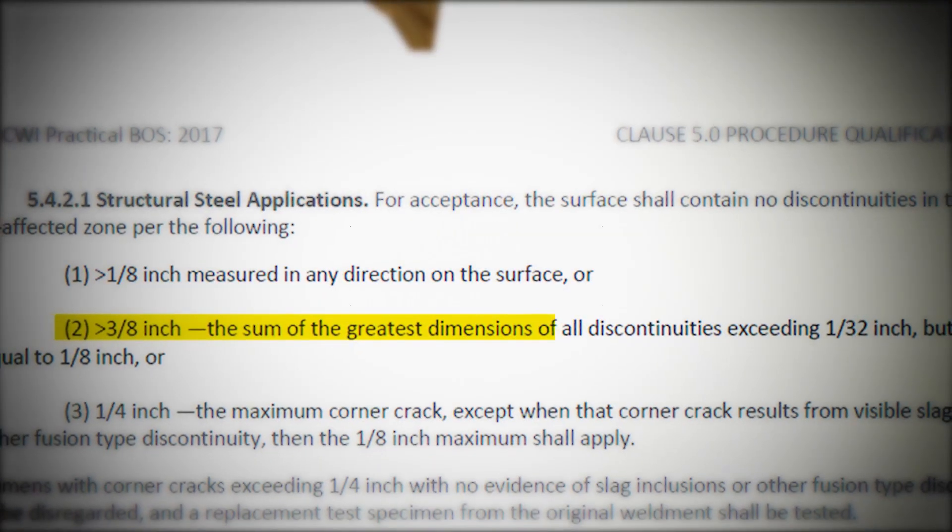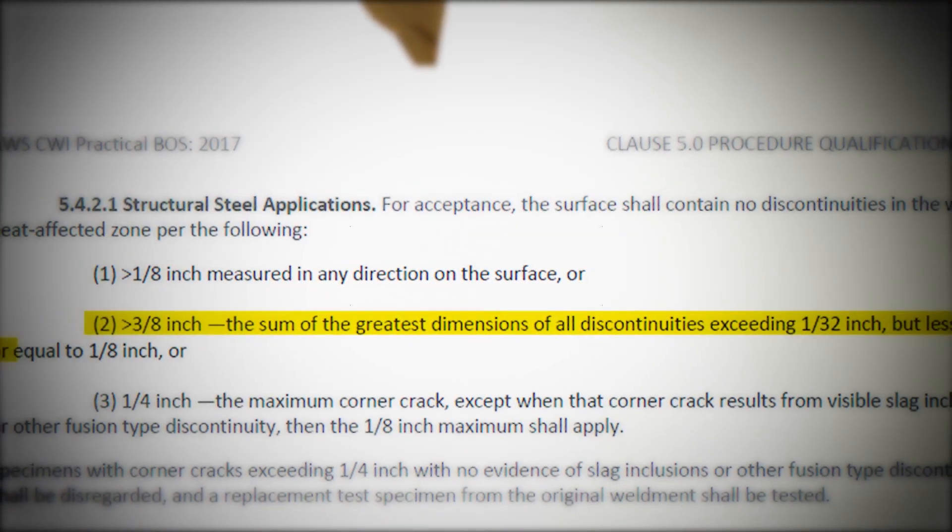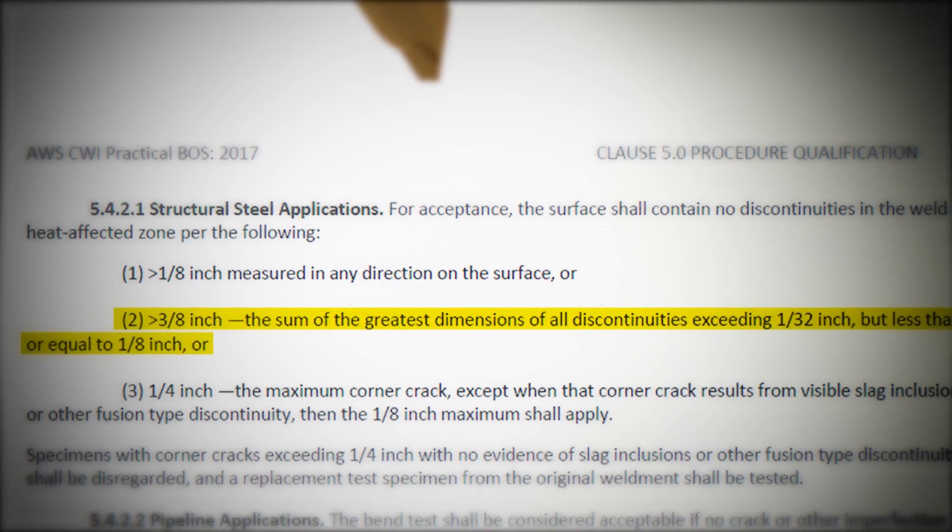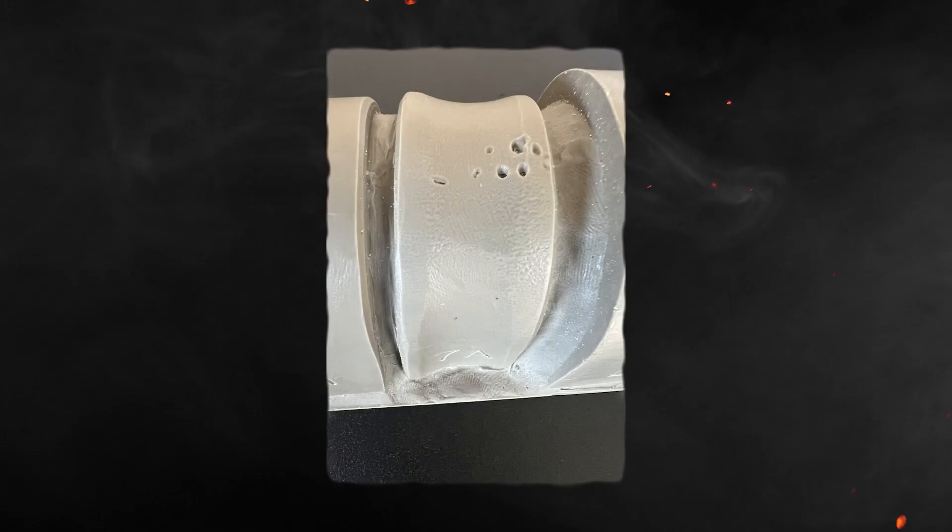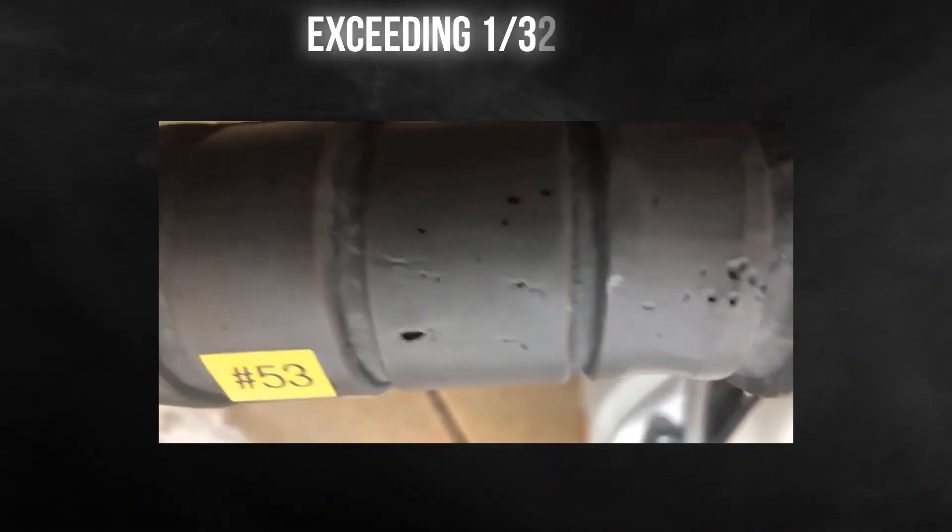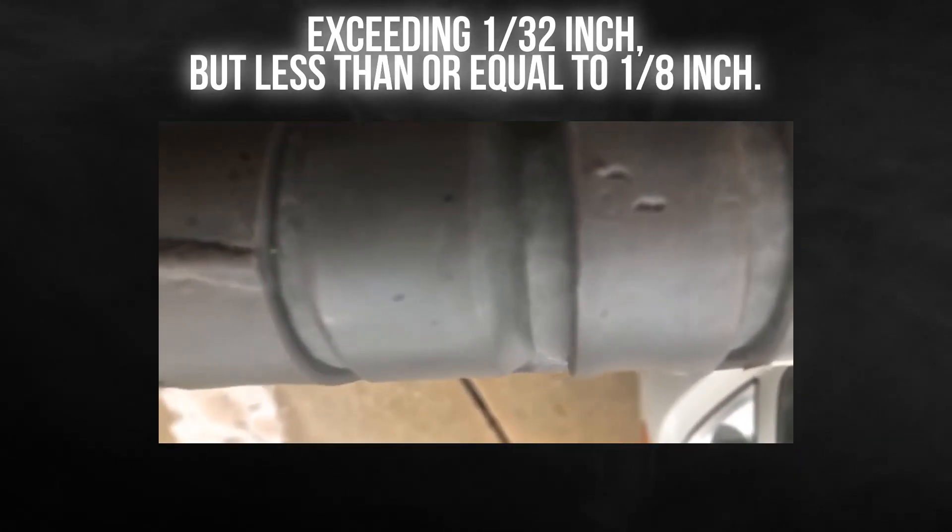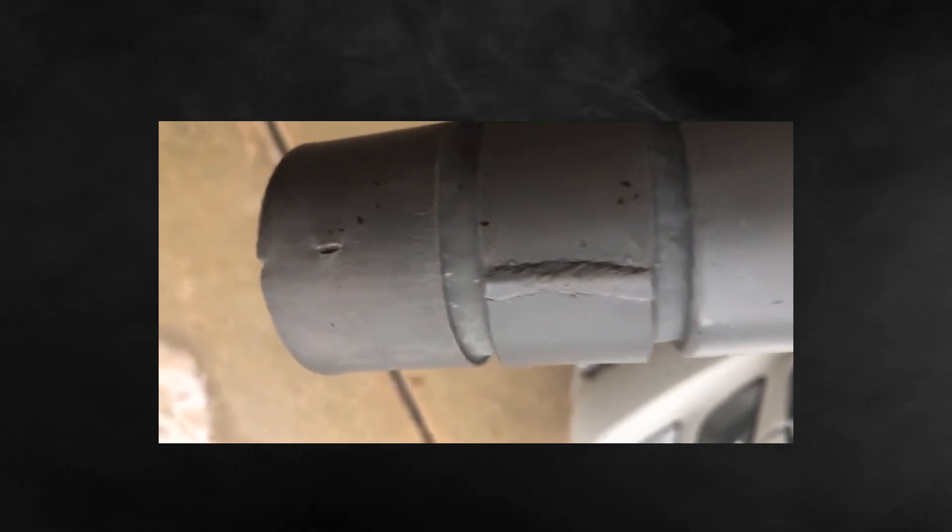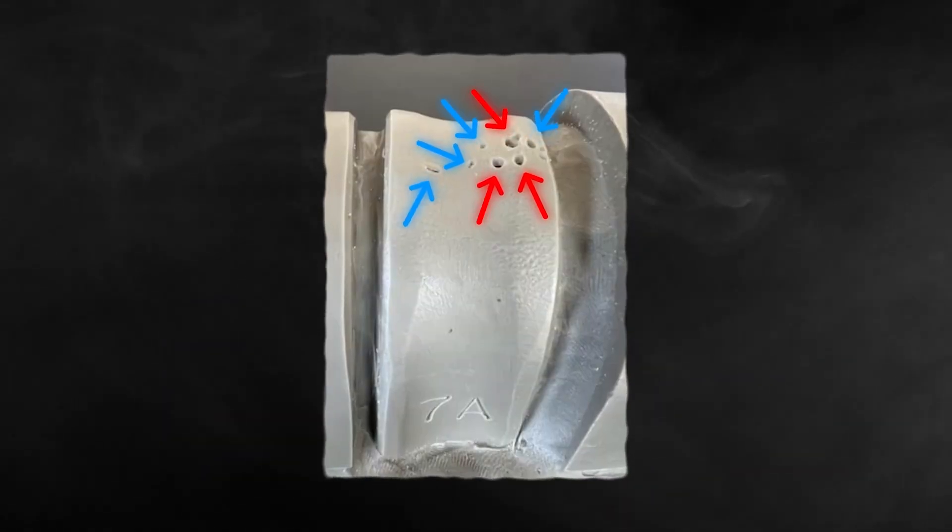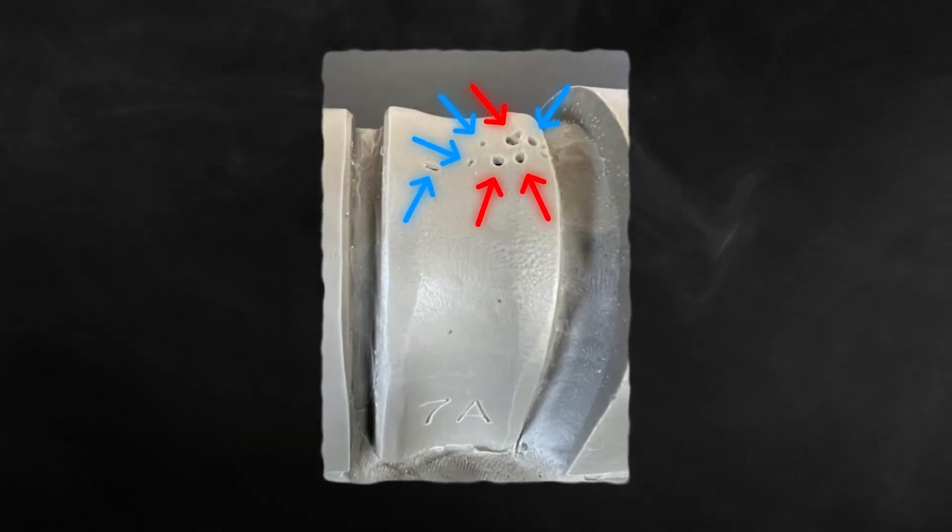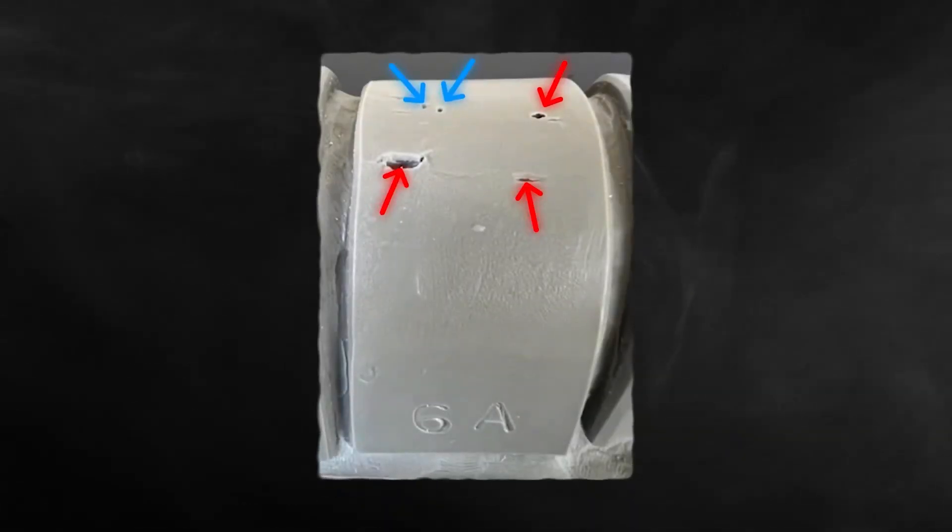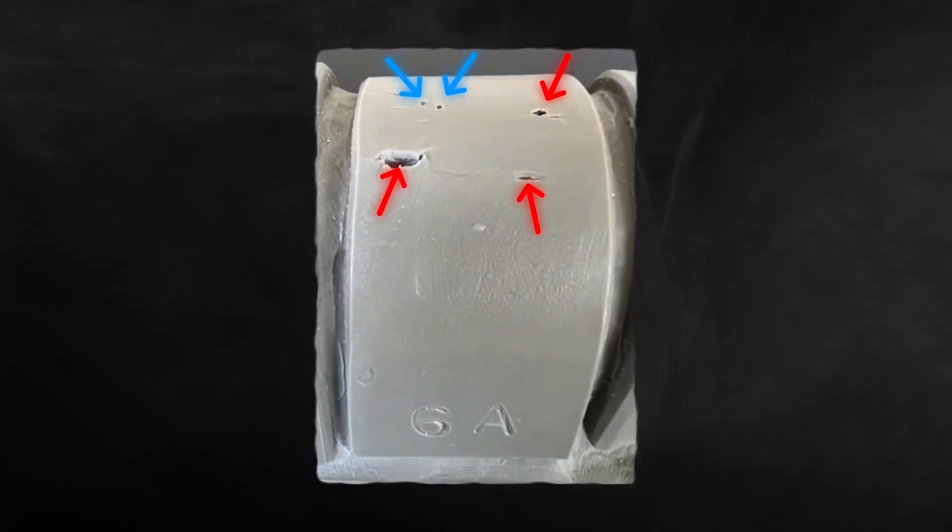For rule number two, it confuses a lot of candidates, so I'm going to try my best to break it down. This rule will basically apply if you have multiple fractures on the band specimen exceeding 1/32 of an inch but less than or equal to 1/8 of an inch. If you do see a discontinuity of 1/32 of an inch on the money, disregard it. You have to add up the total sum of each fracture and it can't be greater than 3/8 of an inch.